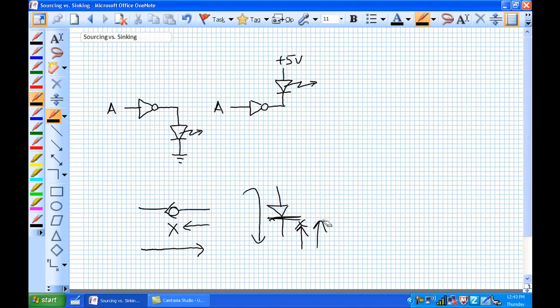So now, how do we establish current flow? Well, we have to have a potential difference. So a diode with plus 5 volts on this side and plus 5 volts on that side, will it have any current going through it? The answer is no, because there is no potential difference. So that light-emitting diode will not emit light because there is no current flow through it.